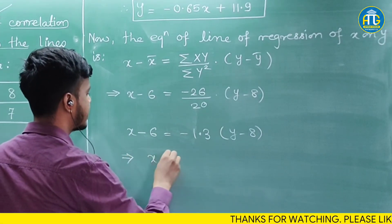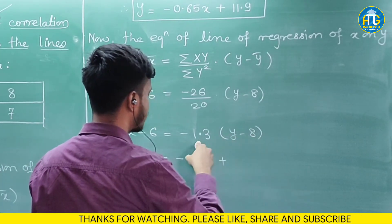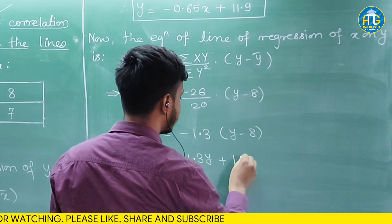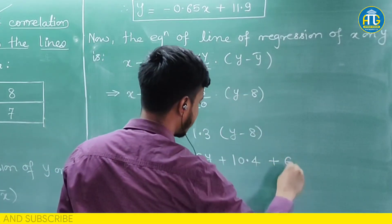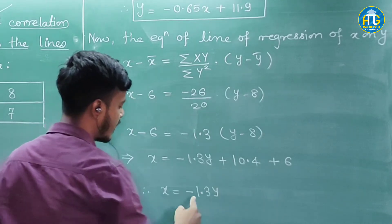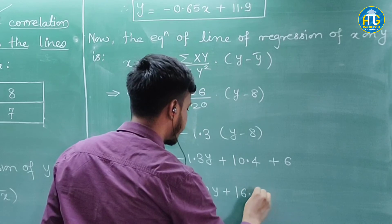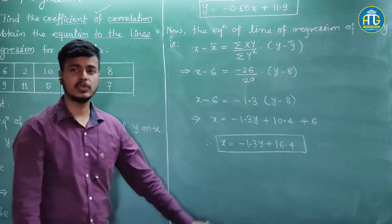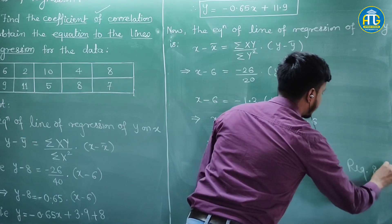Taking the constant to the right: x equals minus 1.3y plus 8 times 1.3 (which is 10.4) plus 6. Therefore x equals minus 1.3y plus 16.4. This is the second equation of lines of regression, and this completes the solution of the given problem.